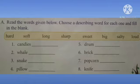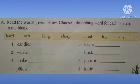We use describing words to tell about the shape, size, color, and number of naming words. Now let's start this exercise. You have to read the words given below and choose a describing word for each one, then fill in the blank.